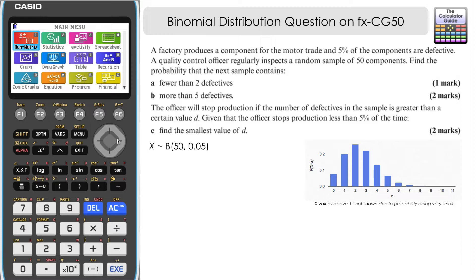And how many trials do we have? How many do we have in our sample? Well, that's 50. So we can model it binomially with an N of 50 and a probability, a P of 0.05.